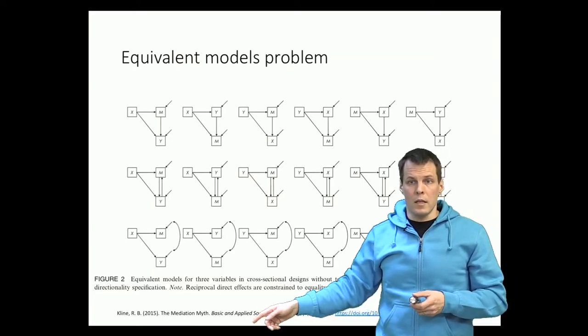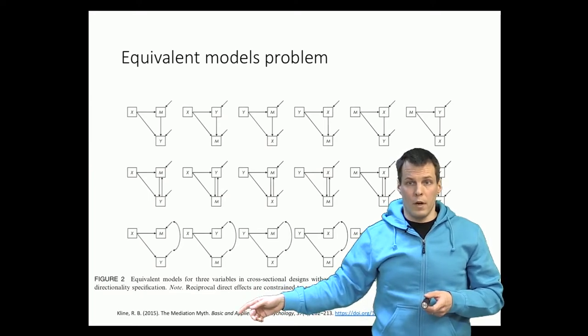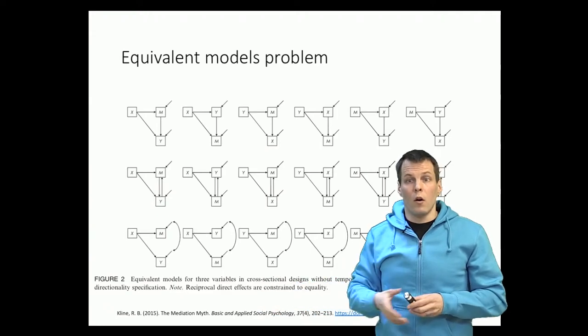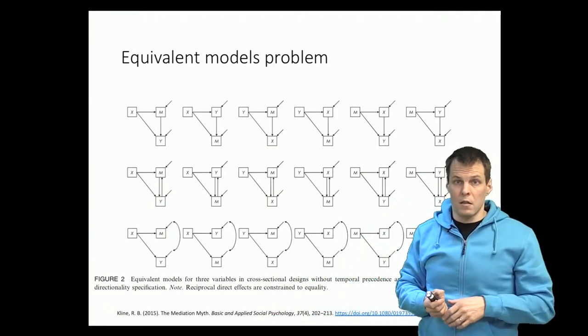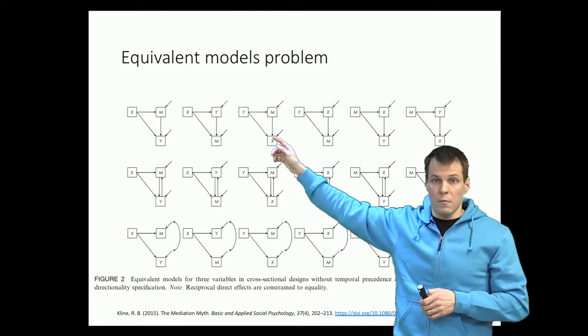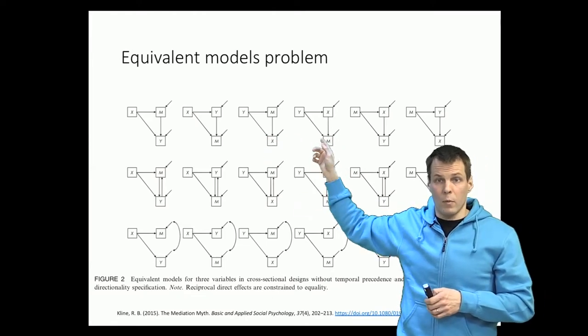This is from Klein's paper, The Mediation Myth. His main argument, or one of the main arguments, is that if you do mediation, you can really only say there's a mediation effect if you have longitudinal datasets. You can't from cross-sectional model data say that this model is the correct one and not that one, because these both fit the same data equally well.